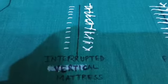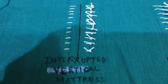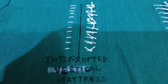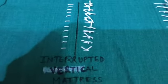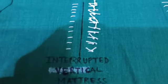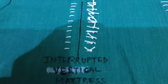The next is the interrupted vertical mattress. It is also an apposition suture pattern, and it is also used for the apposition of the wounds of skin, muscle, and esophagus.